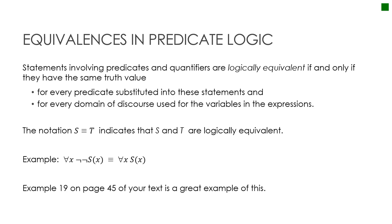Just as we studied logical equivalences in section 1.3, the same holds for predicate logic. Predicates and quantifiers are logically equivalent if and only if they have the same truth value. For example, 'for all x, not not s of x' is equivalent to 'for all x, s of x' by the double negation law. Example 19 on page 45 of the textbook provides a longer illustration of this.